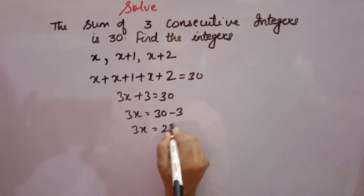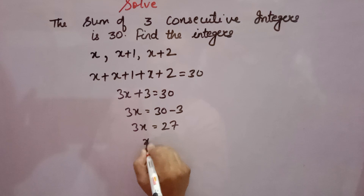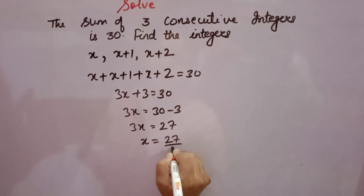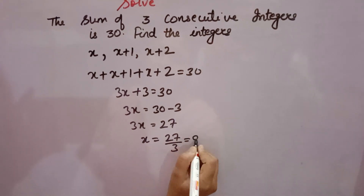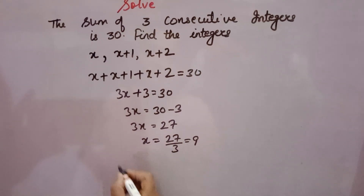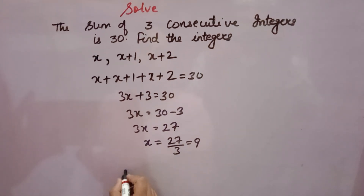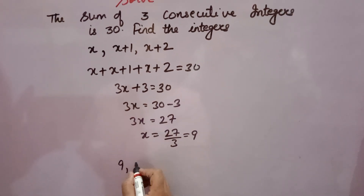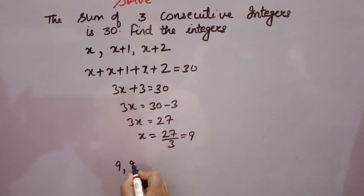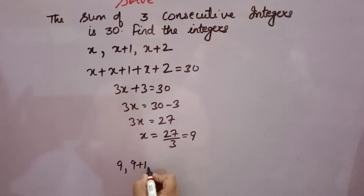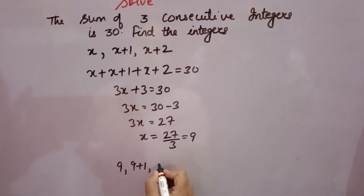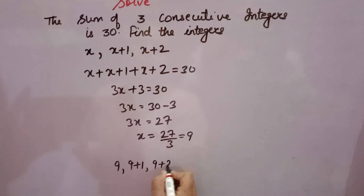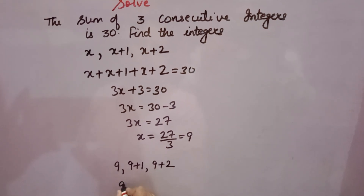So x equals 27 over 3, which is 9. The first number is x, so 9. The second is x plus 1, so 9 plus 1 equals 10. The third is x plus 2, so 9 plus 2 equals 11.